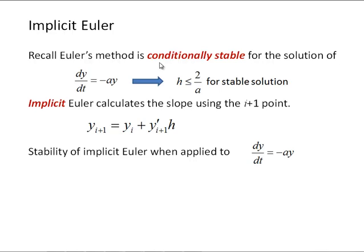So recall Euler's method is conditionally stable for the solution of the differential equation dy/dt is equal to negative a times y and what that meant conditional stability was that as long as h, our time step, was less than or equal to 2 over a, we got a stable solution.